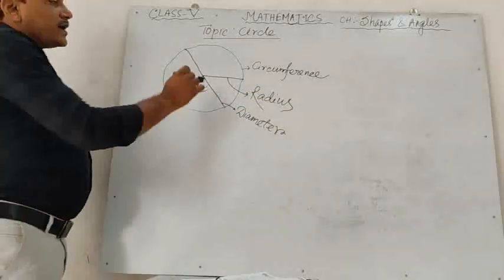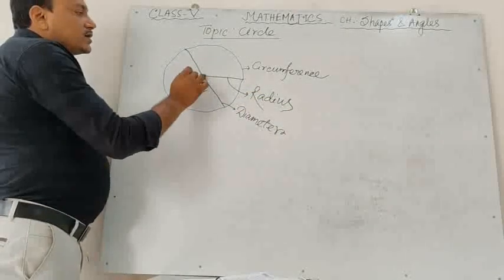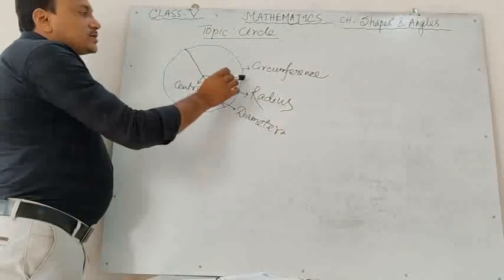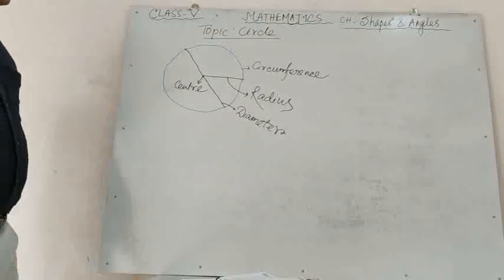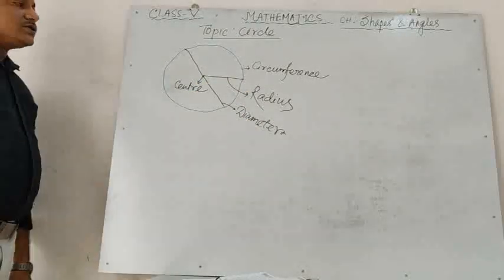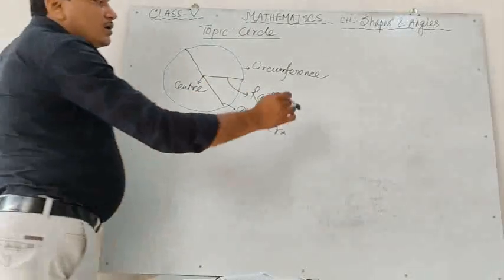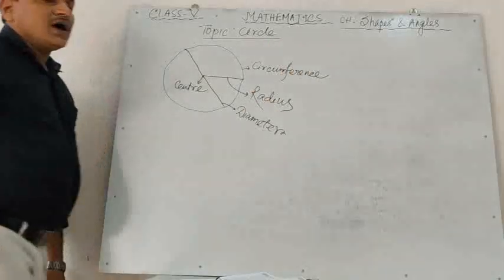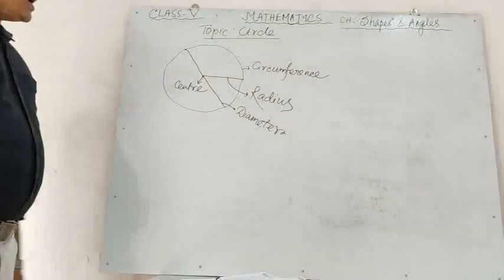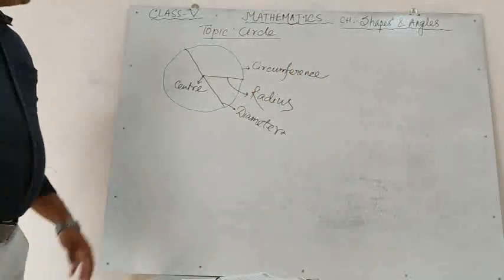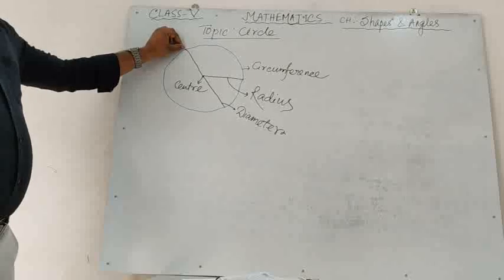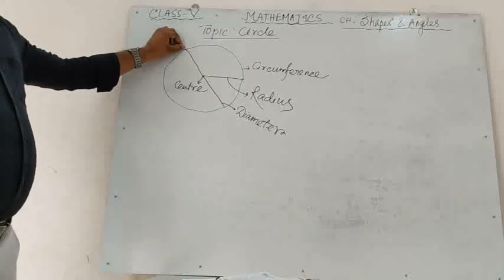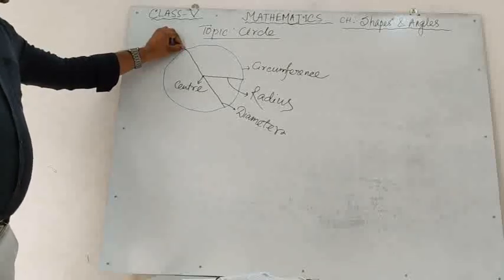The distance from the center of the circle to the circumference of the circle is called the radius of the circle.